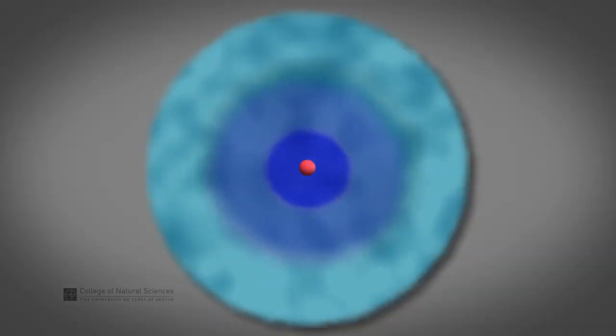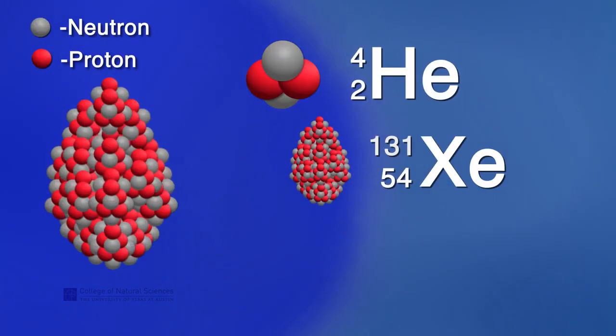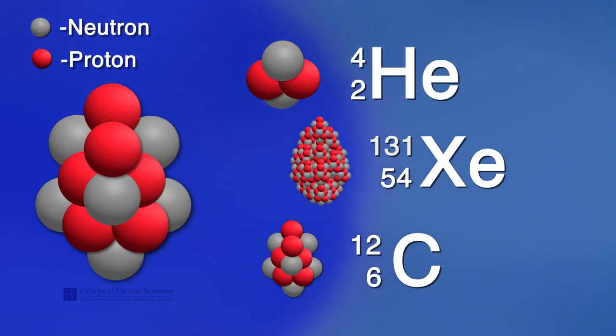That's not true in nuclear chemistry. In nuclear reactions, we're actually changing the nucleus of the atoms. Because the type of atom, whether it's helium, xenon, or carbon, depends on the number of protons, if we change that number, then we change the kind of atom that it is. In nuclear chemistry, that's exactly what happens.